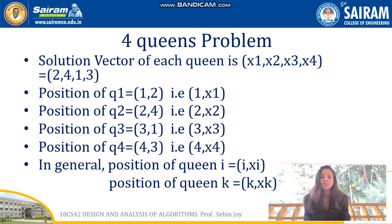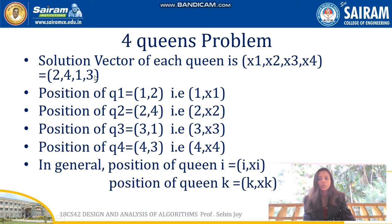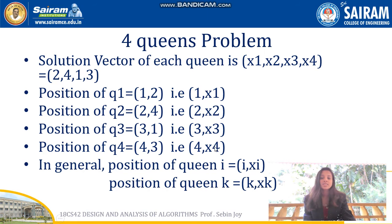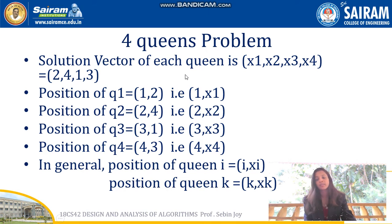Suppose there is a four queens problem where N equals four. You are given a 4×4 chessboard. The solution vector is (2, 4, 1, 3), meaning: queen 1 is placed at row 1, column 2; queen 2 at row 2, column 4; queen 3 at row 3, column 1; and queen 4 at row 4, column 3. So the position of queen i is (i, xi), and the position of queen k is (k, xk). We will understand this better when discussing the four queens problem in detail.